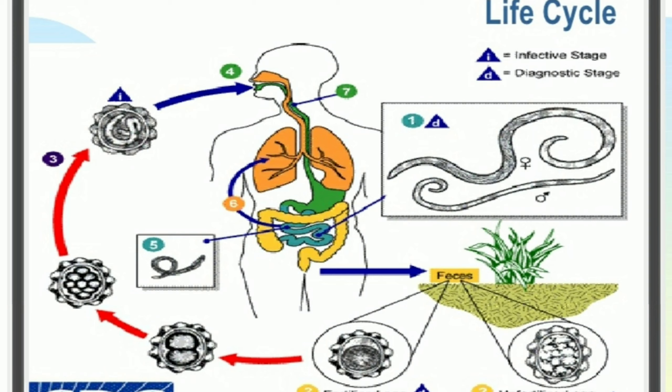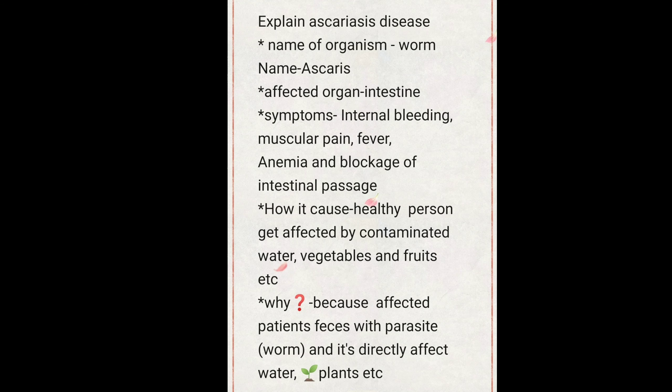The worm multiplies and reproduces in our intestine. Our intestinal passage becomes blocked by this worm, and the intestinal passage is completely degraded. A large number of eggs pass out in the feces, and when discharged onto any medium like water, plants, or soil, they go inside the next carrier — human beings. This is how the Ascaris cycle is carried out.